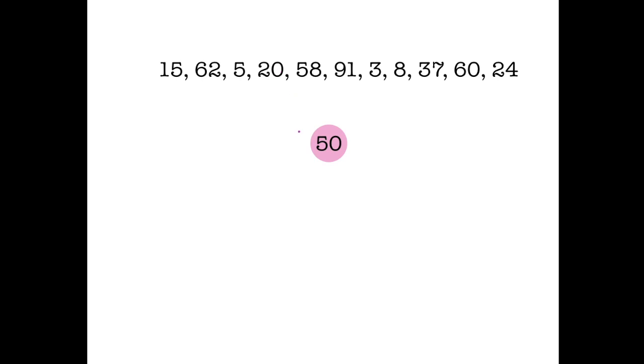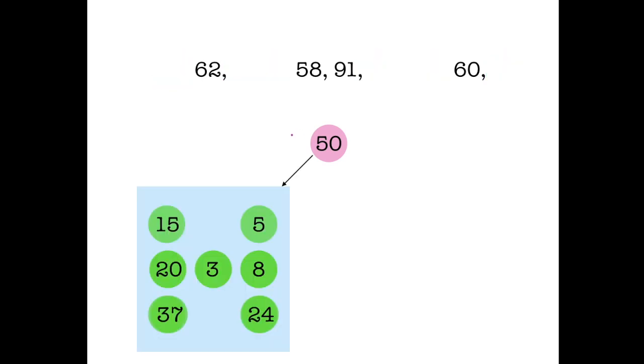Now we are talking about binary search tree, therefore the integers which are less than 50 will go into the left subtree, and the elements or the integers which are greater than 50 will go into the right subtree.